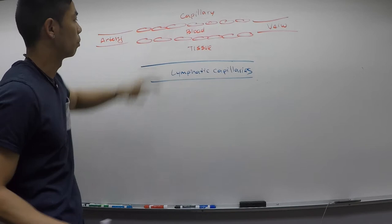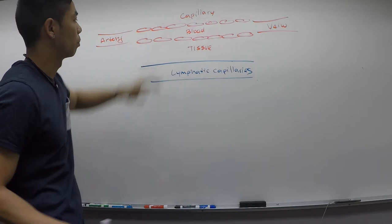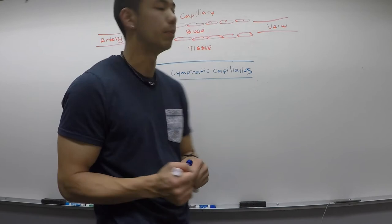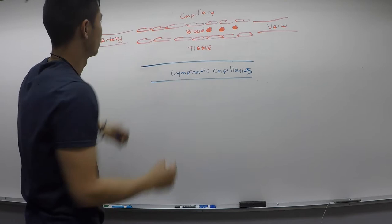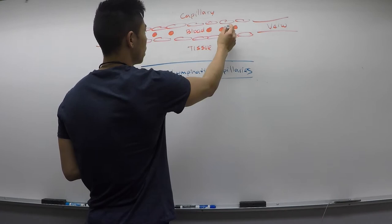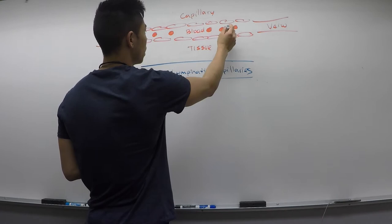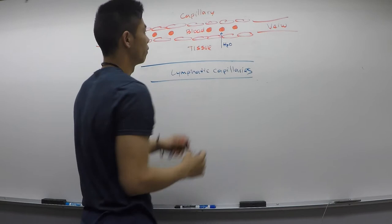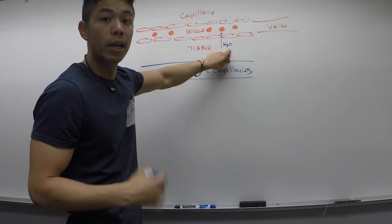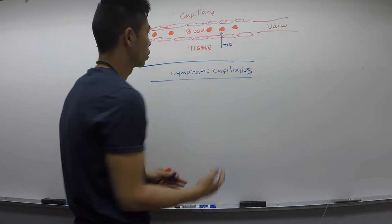Let's talk about what's going on inside our blood. We have these very important plasma proteins known as albumin. These proteins are too big to diffuse through the endothelial cells, so that's going to create a concentration gradient. What that means is there's going to be more solutes in our blood than in our tissue, so we're going to have a net flow of H₂O that wants to flow into the blood down its concentration gradient. This is known as osmosis, and we generate a pressure known as osmotic pressure.